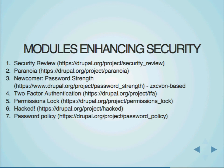Here's the list of modules. I've listed them in what I consider to be priority order. Security Review I encourage on every single site — it's really helpful in identifying those common mistakes and giving you warnings. It has Drush integration, you can set it up in a cron job to send you an email of the output, and you can set it up to log information into Watchdog. Next: Paranoia. Basically going back to the point about the PHP module — if you sort of assume somebody will eventually break into your site, you want to make their next steps as hard as possible. Paranoia will help prevent the execution of PHP to limit the kinds of things somebody can do.